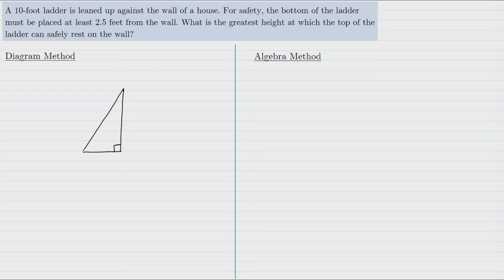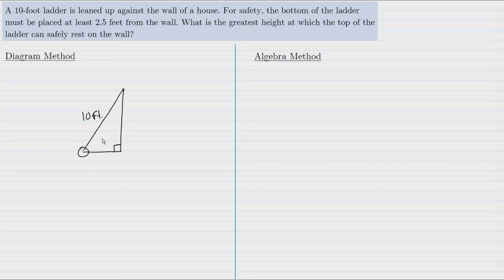We have a ladder leaning against the wall, forming a right triangle. The ladder is 10 feet long. To maximize the height the ladder reaches, we want the base as close to the wall as possible, but for safety it can't be closer than 2.5 feet. So we use 2.5 feet for that leg. We need to find how high up the wall the ladder reaches, so let's call that side A.